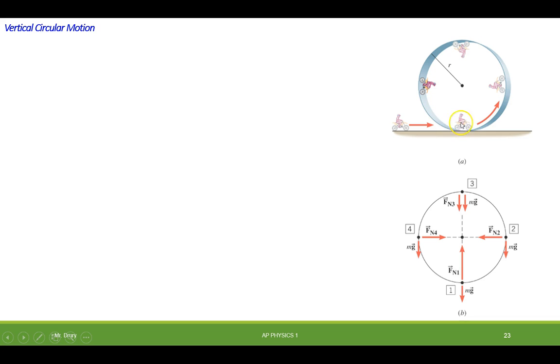And what is the track always going to be doing? It's always going to be pushing the rider towards the center of the circle.